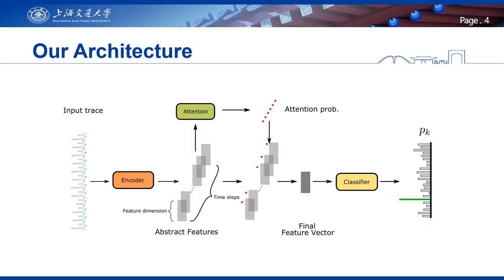Here is our new architecture. We propose this architecture to conduct end-to-end profiling whether the raw traces are desynchronized or protected by masking countermeasures. We could see how these three components work from the viewpoint of SCA. Roughly speaking, the encoders first encode raw traces to abstract features, then the attention mechanism gives each feature a score and computes weighted sums, and finally the classifier generates probabilities from the final feature vector.